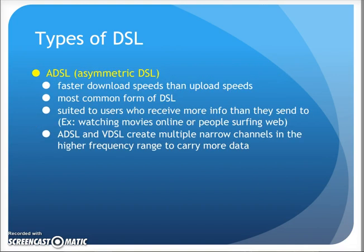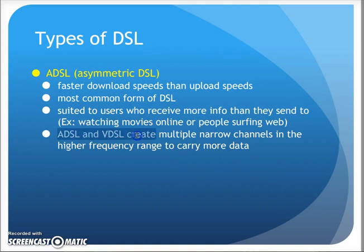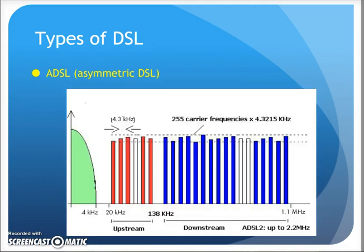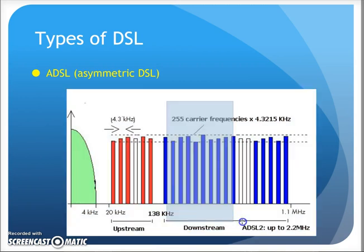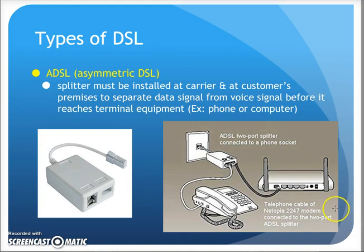ADSL — Asymmetric DSL — provides faster download than upload, which is common for typical users who download much more data than they upload, making it a common customer connection. ADSL creates multiple narrow channels in the higher frequency range to carry more data. Looking at the frequency diagram, recognizable human speech sits at the bottom, a small upstream band is next, and then a much larger downstream band occupies the higher frequencies — all handled by the ADSL modem.